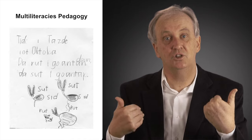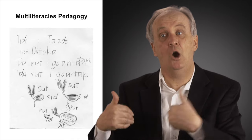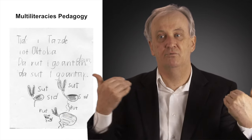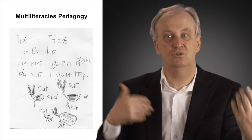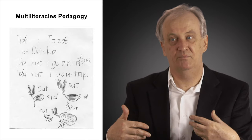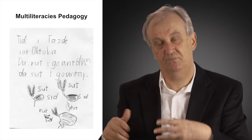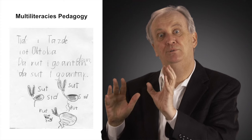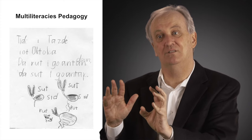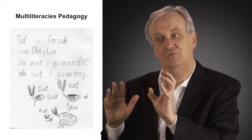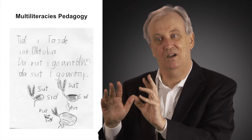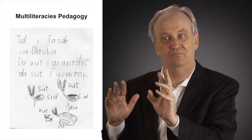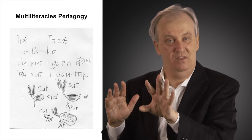The text reads: 'Today is Thursday, the 10th of October. The root — I go an town. The shoot — I go an town. He goes up.' So the root goes down, the shoot goes up. And then we've got some labelled images of shoots, seeds, and roots.